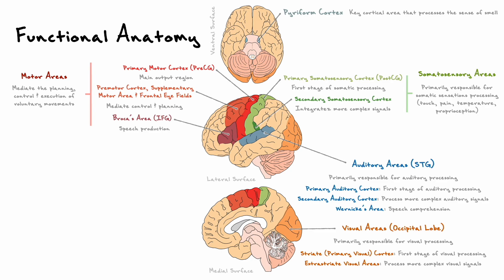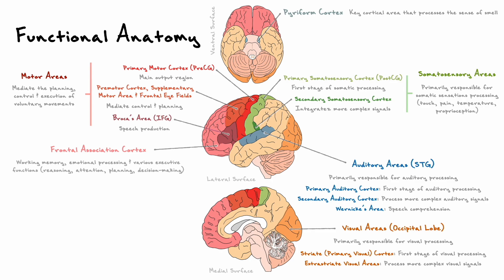The most notable example of this is the frontal association cortex. This region of the brain is one of the most important factors that makes us human, as it processes our working memory — which is our ability to temporarily keep information in our minds — it processes our emotions, and various executive functions such as our ability for reasoning, attention, planning, decision making, and many more.